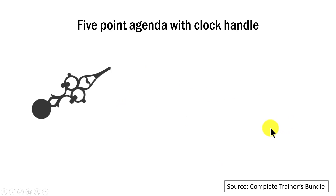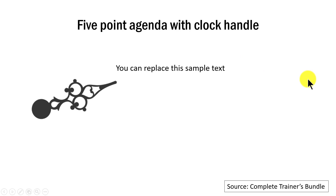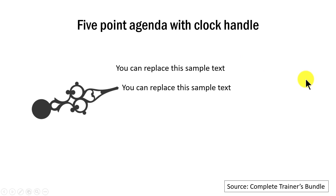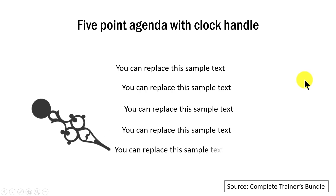Now the fourth idea is this one, where we pick up the metaphor of time and use this clock needle to list the various events that have happened over time. So on a click, we have the first event that happened way back, and then as the time moved, the second event happened, the third event, the fourth event and the fifth event. And here you can use this slide as your agenda in case your presentation is about recounting the events that have happened over your company's history.